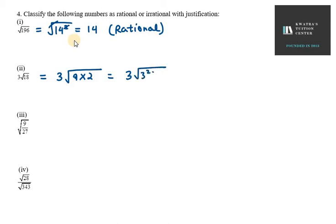So 3² × 2, and we are left with 9√2. So 9√2, how is the number? It is irrational.